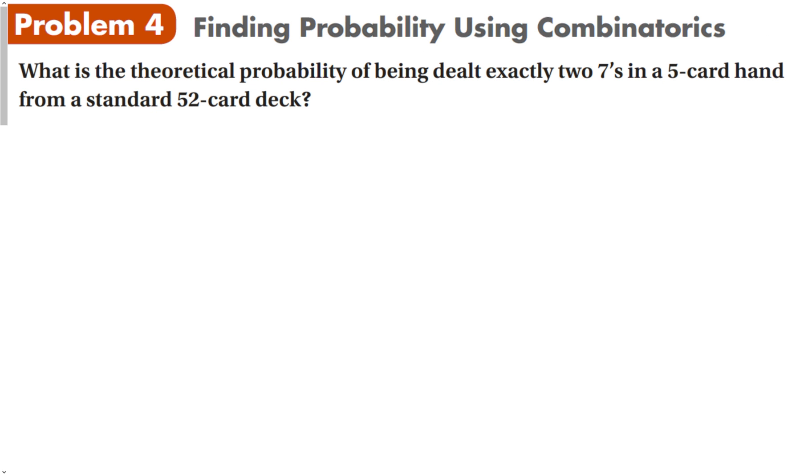What is the theoretical probability of being dealt exactly 2 sevens in a 5-card hand from a standard 52-card deck? I'm pretty sure that we don't want to list out, okay, well, you can get 2 sevens and 3 aces. You can get 2 sevens, 2 aces, and a king, right? So you can see that there's going to be a lot of possibilities. I don't want to list them all out and count them because I would be here for a very long time. So remember that probability is going to be the number of times what we want happens divided by the total number of possibilities.